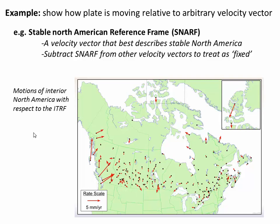Okay, so in this case, a bunch of geodesists get together and they look at how the interior of North America is moving relative to a fixed reference frame like the ITRF. And then they pick some vector that is representative of roughly how the interior of North America is moving in that absolute reference frame. And then what we can do is if we have any other vectors that we want to compare to interior North America, we just subtract off the SNARF or the stable North American reference frame from those. And we'll look at that at the very end of this video.